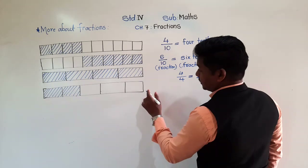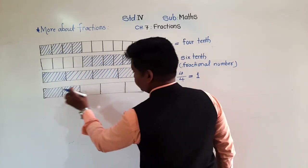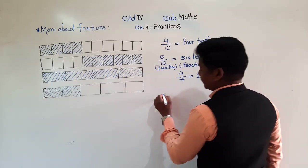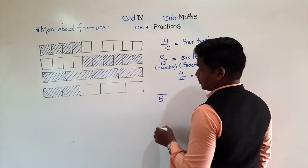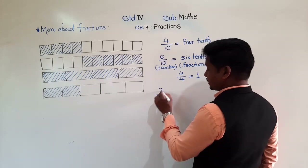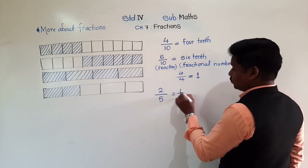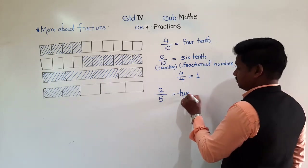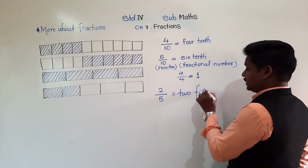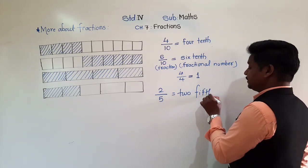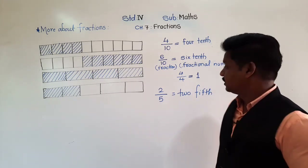In the fourth strip, 1, 2, 3, 4, 5 — it is divided into 5 equal parts, and out of 5, 2 parts are shaded. That is 2 fifths. 2 fifths of the strip is shaded.